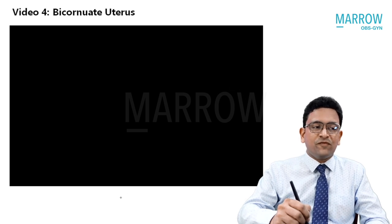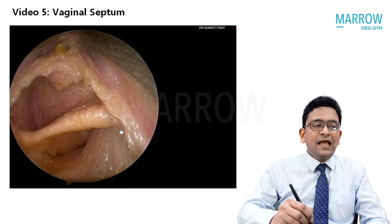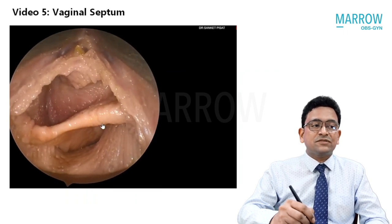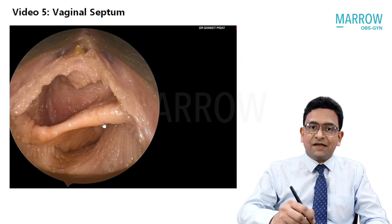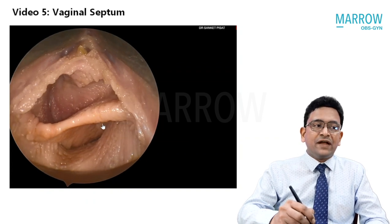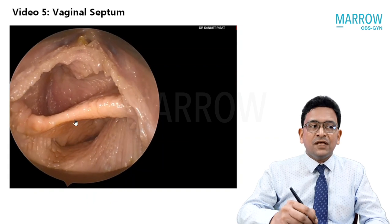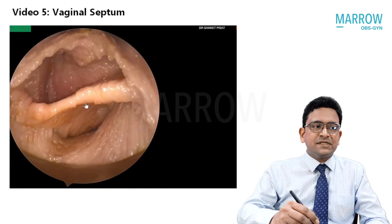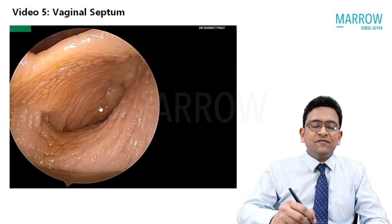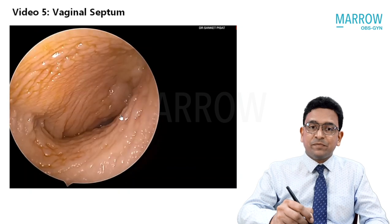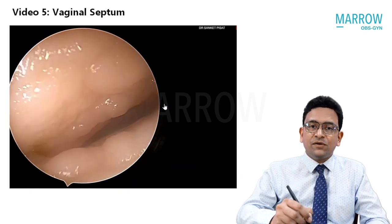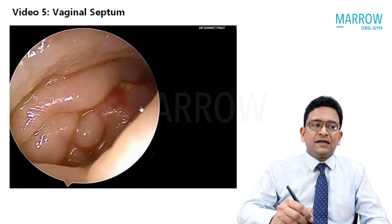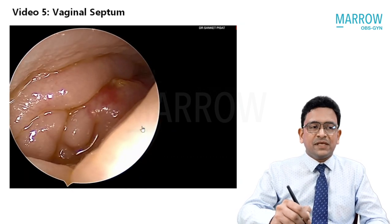Now, this is a video of a vaginal septum, which means the septum has not limited itself to the uterine cavity but is also dividing the vagina into two halves. This lady has an oblique vaginal septum, but many times it is a vertical septum. When the scope goes inside, you will see the same picture — this is a complete non-fusion of both the ducts, and she practically has two separate uteri divided by a vaginal septum in the center.